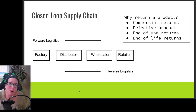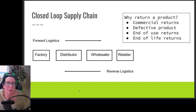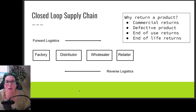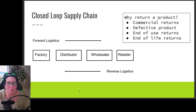We also need to recognize what happens to products when it's end of use. So I have an iPhone, I want a newer model — there's nothing wrong with it, it still works, but I don't want it anymore. I want the one that has new features. Is there a way for me to trade it in, so when I buy the newer model can I get a discount by trading in the old one? In which case it goes back to the Apple store and then it moves backwards through the supply chain.